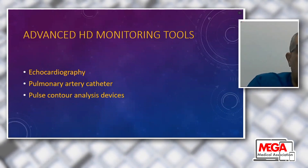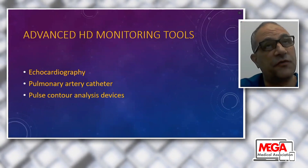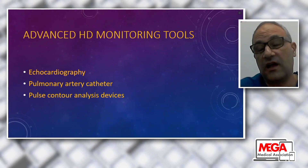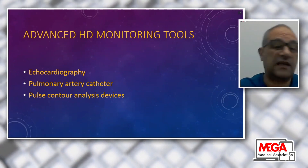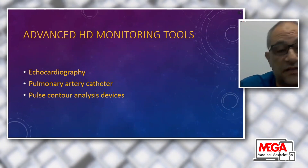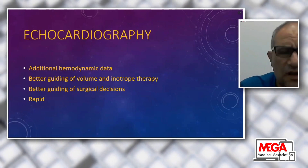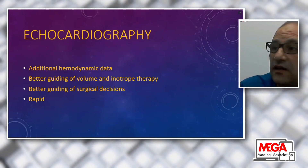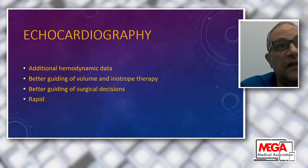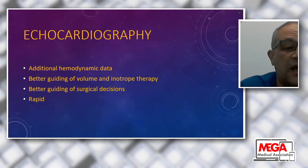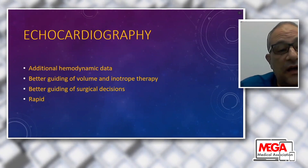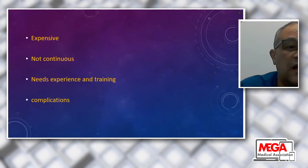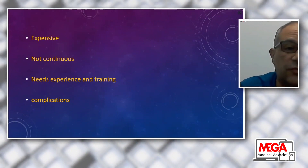Our advanced hemodynamic monitoring tools include echocardiography—the gold standard. Transthoracic echo can be used in intubated patients with good views; if the window is difficult, transesophageal echo is used. Echocardiography offers additional hemodynamic, anatomical, and pathological data, better guides volume and inotrope therapy and surgical decisions, and is rapid and easy to perform, especially the transthoracic approach. However, it is expensive and not continuous, which is a major limitation compared to other monitors.